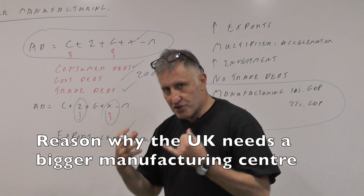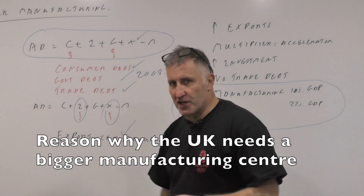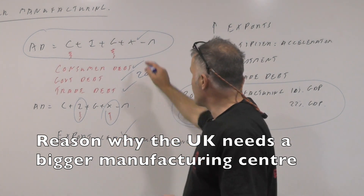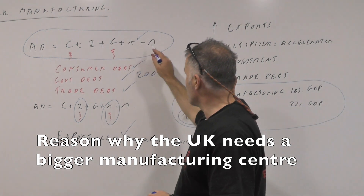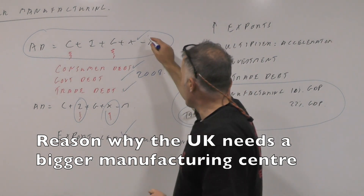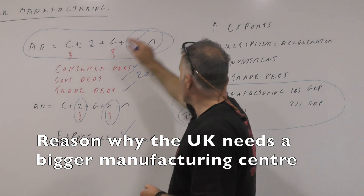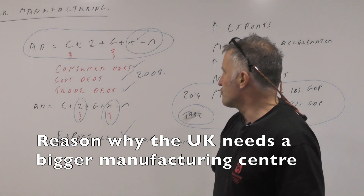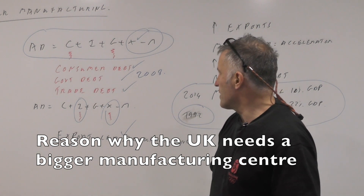This shows how much demand there is in the UK economy. X stands for exports and M stands for imports, and this sector is pretty negative in terms of UK performance.